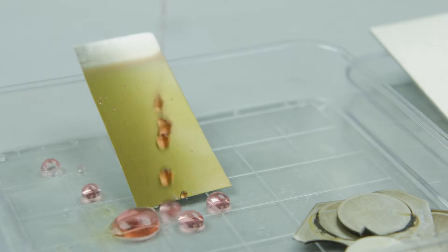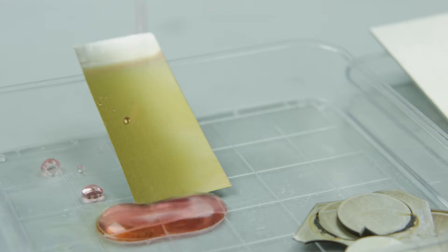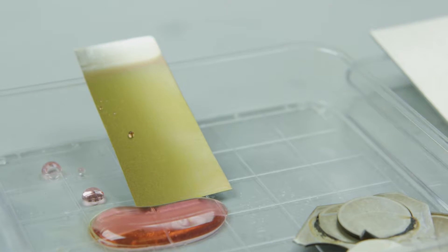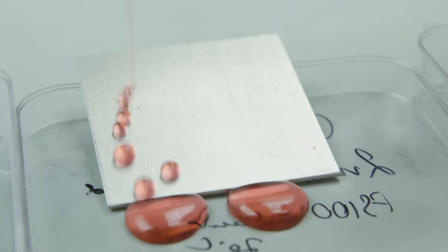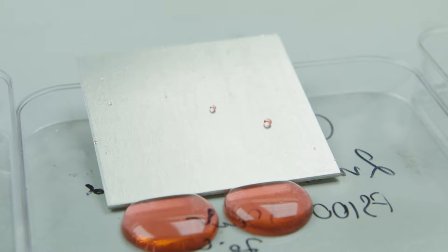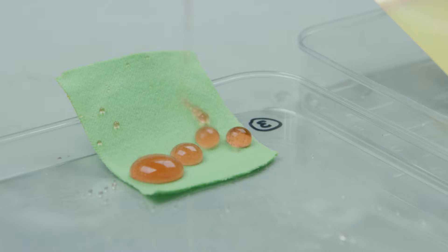A good example of the impact of the technology-to-market program is the Harvard SLIPS project. We create materials, any materials really, whether it's metals or polymers or glass, that are coated with a layer of liquid and everything slips on the liquid.